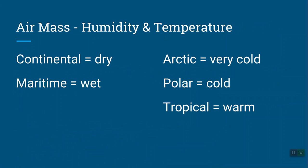The continental versus maritime part of the name tells you about humidity. Maritime — think of marine, or 'mare' in Spanish, which means sea — is an air mass that formed over an ocean. As you can imagine, if you're forming an air mass over the ocean, water vapor rises as water evaporates, and it incorporates into that air mass. So any air mass with the word maritime in it is going to be high humidity — wet or moist. Whereas a continental air mass forms over the land, and there's not very much water evaporating up into it, so it's going to be relatively dry.